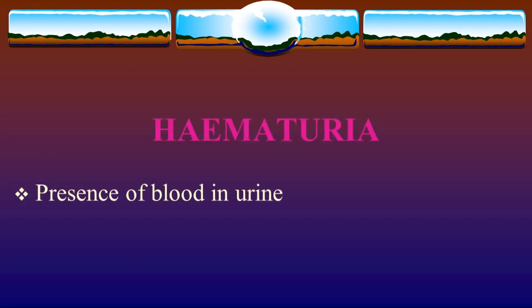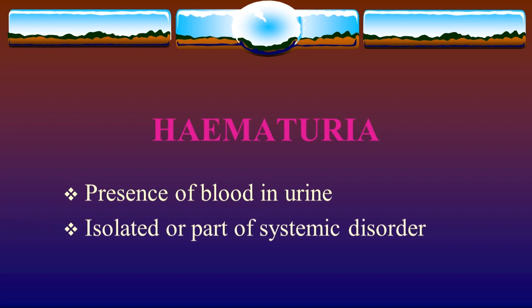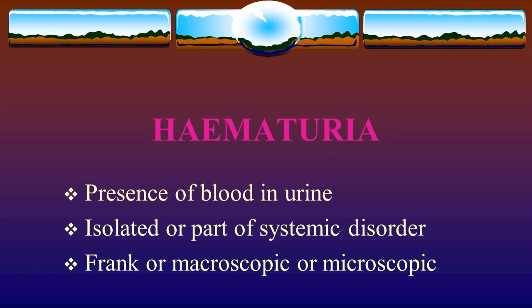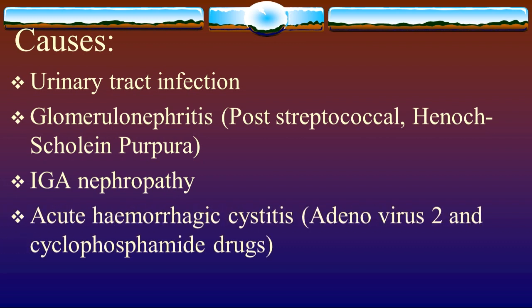Hematuria is the presence of blood in urine, either isolated or part of a systemic disorder — frank (macroscopic) or microscopic. Causes include urinary tract infection, glomerulonephritis, post-streptococcal nephritis, Henoch-Schönlein purpura, IgA nephropathy, acute hemorrhagic cystitis, adenovirus type 2, cyclophosphamide drugs, and calculi.